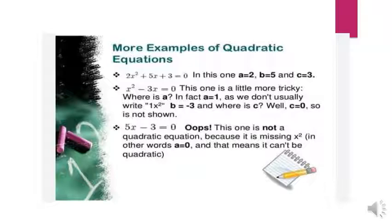Example 2: x² - 3x = 0. This one is a little more tricky. Here a = 1 (we don't usually write '1x²', just 'x²'), b = -3, and the constant c is not shown because it equals 0.